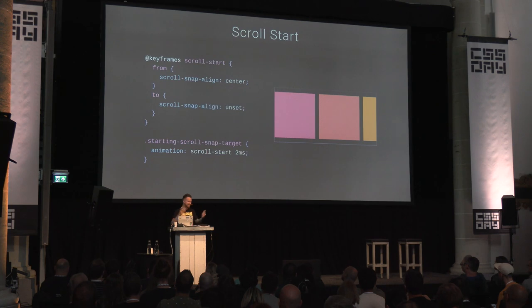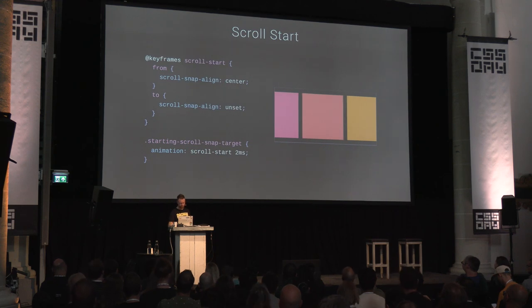Scroll start: you want a scroller to load at a position other than the top or left. This is common — like Spotify showing a header on load with a hidden search bar tucked above that you scroll up to. Normally we do this with JavaScript: window onload, target main, scrollIntoView instantly. It's late to the party and JavaScript-dependent. Here's a way to do it with CSS.